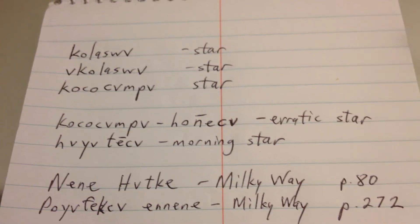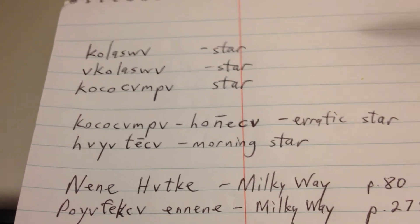Using the Martin and Moulton dictionary, I'm playing with some of the terms for the stars in Muscogee.